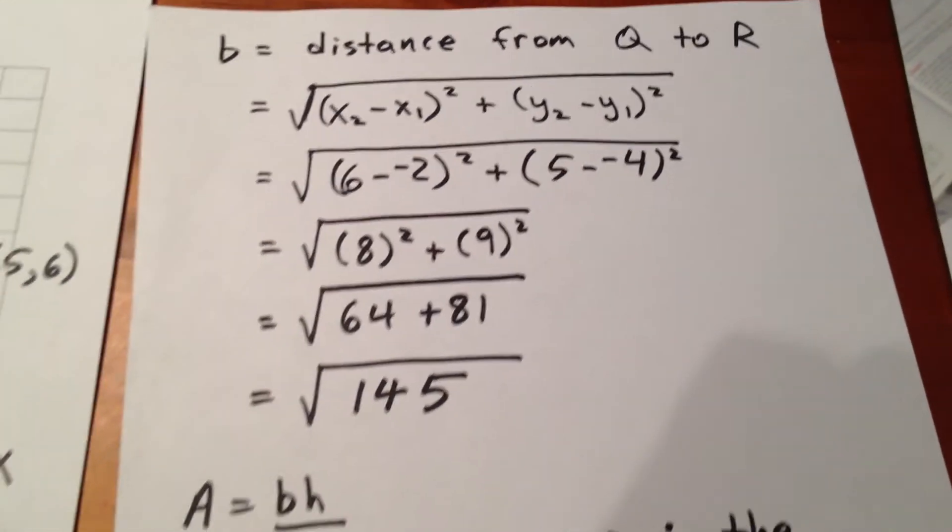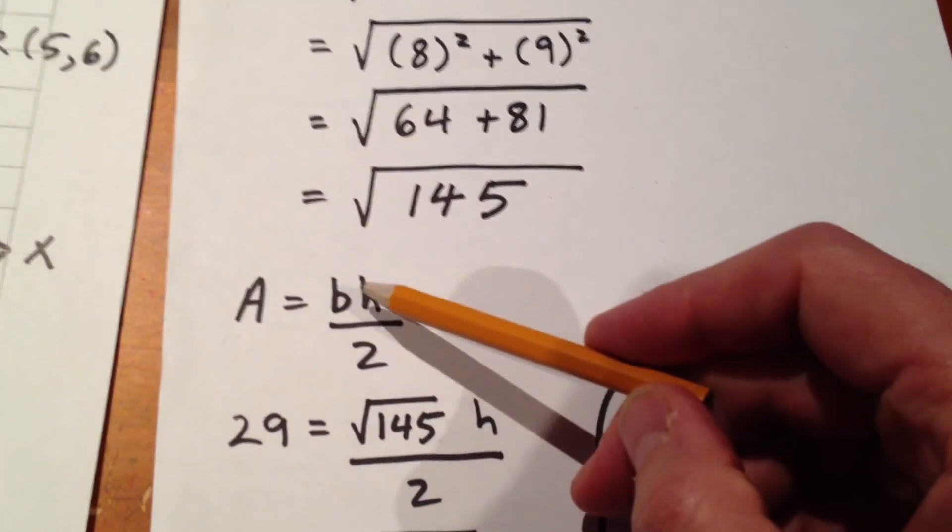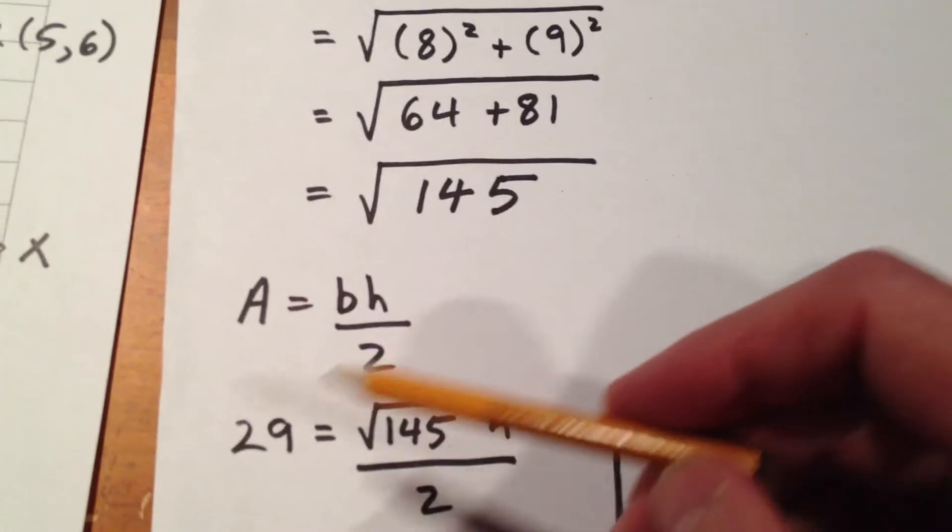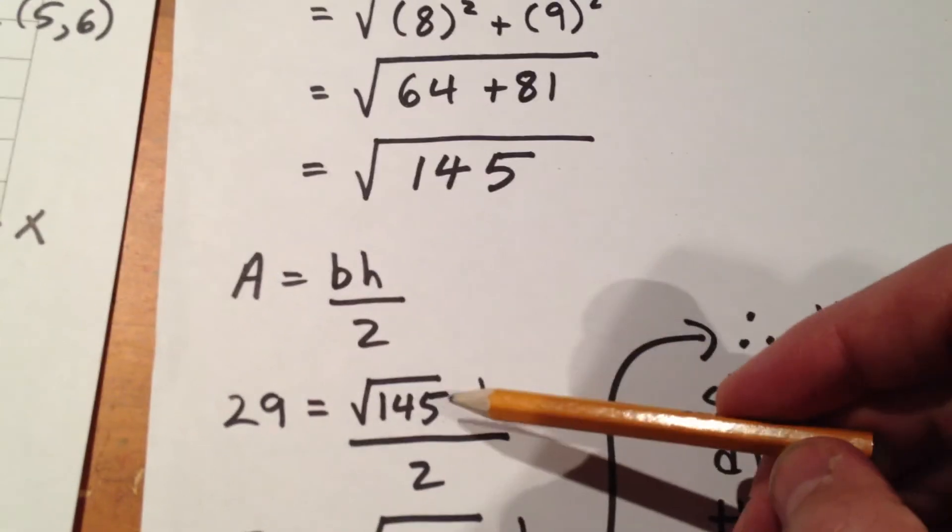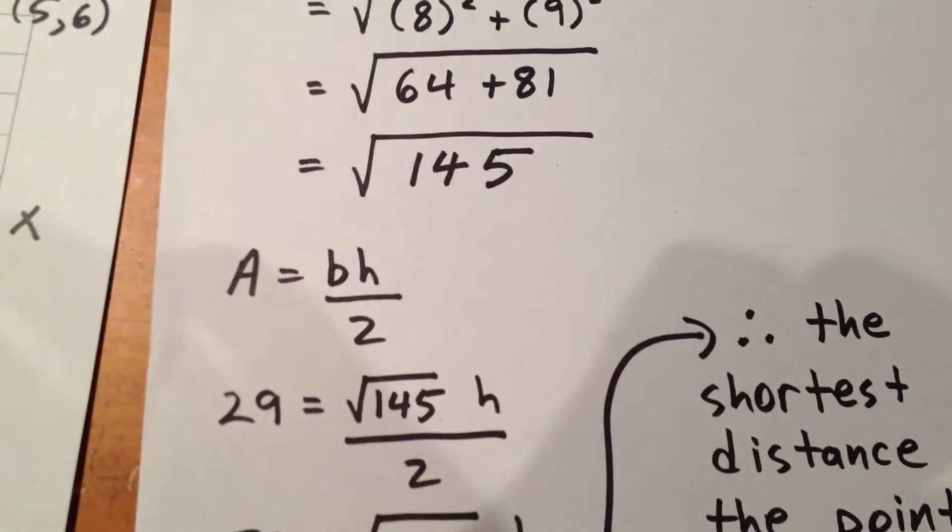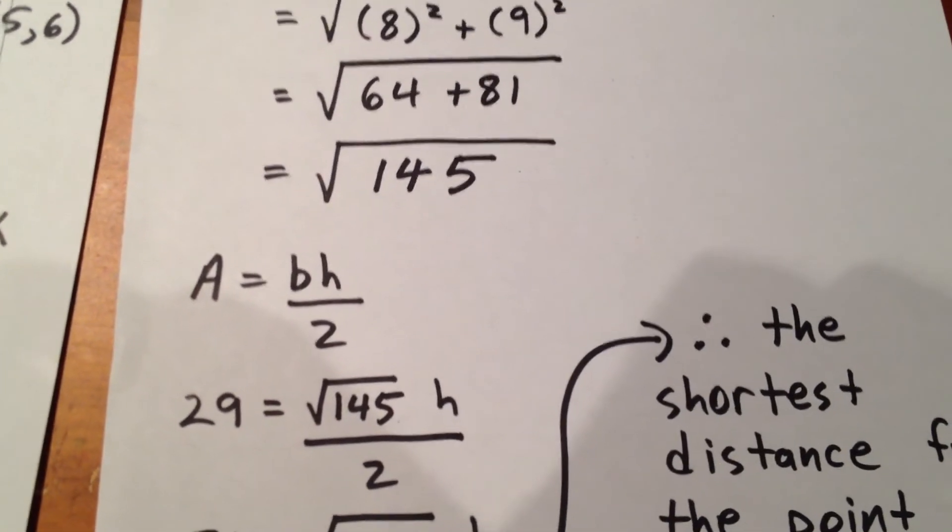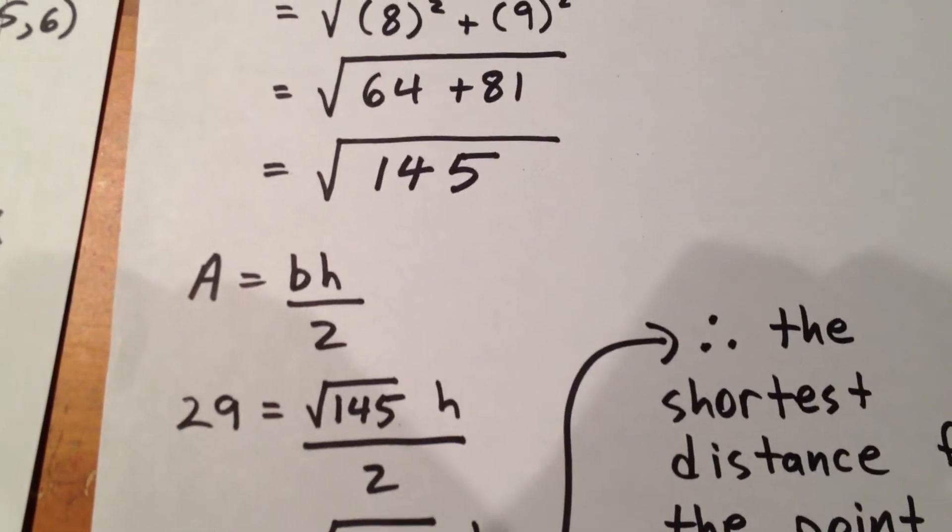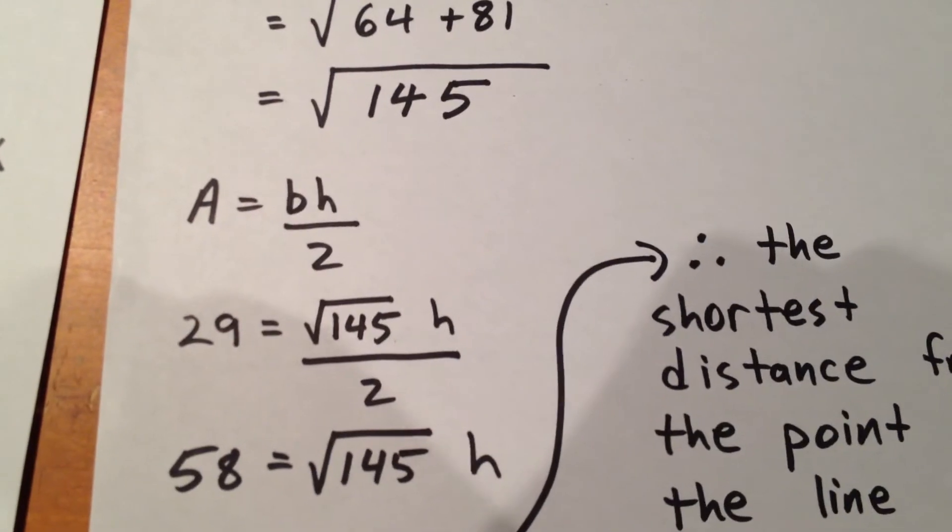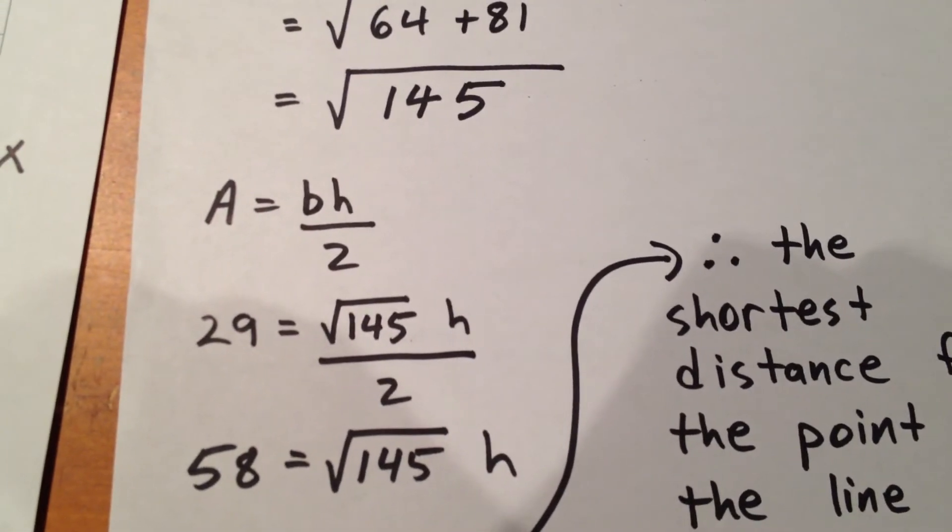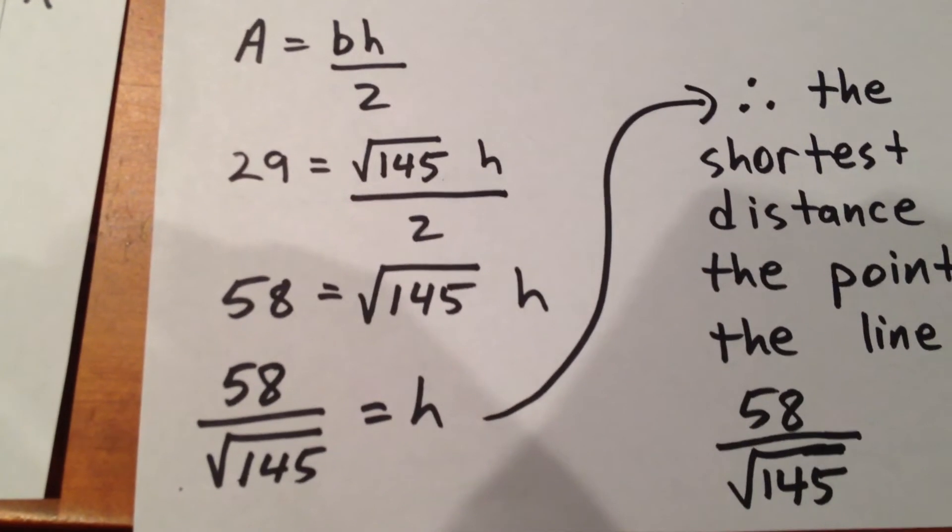So now, what we have is the knowledge that the area of a triangle is base times height over 2. We know the area of the triangle to be 29, using the down product, up product method. We know the base of the triangle to be root 145, using the distance of a line segment formula. So now, we know that 29 is root 145 times h over 2. Multiplying both sides by 2 gets us 58, equaling root 145h. Which means 58 over root 145 is equal to h.